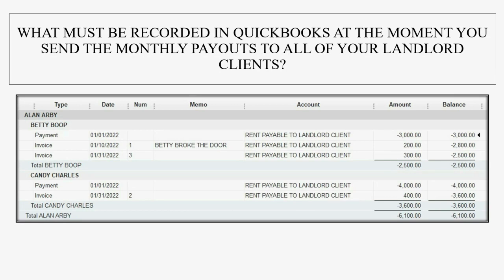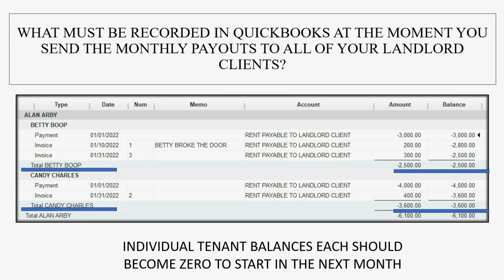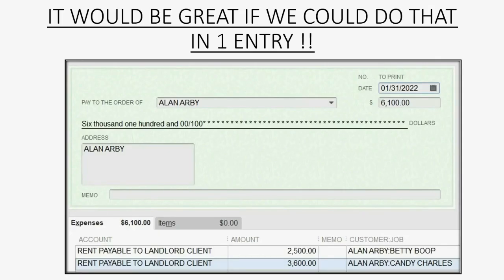When you record the payment, not only do you have to record one big reduction of your bank account for the total you paid, but you also have to record each individual tenant's balance so that each individual tenant's balance becomes zero at the moment you pay. The amount indicated as owed for each tenant should become zero so that you can start fresh in the next month.